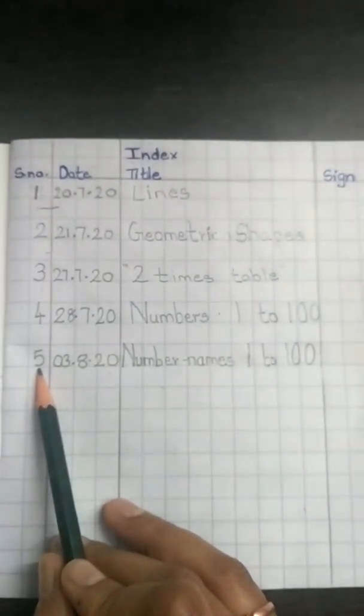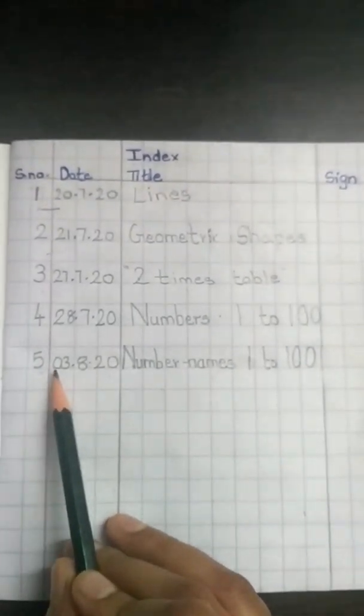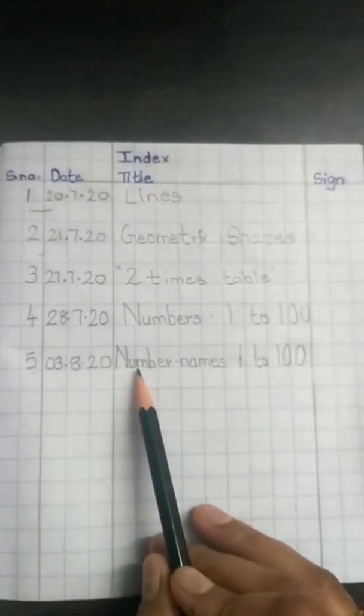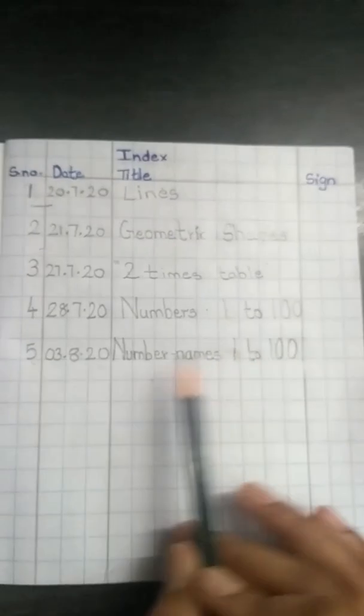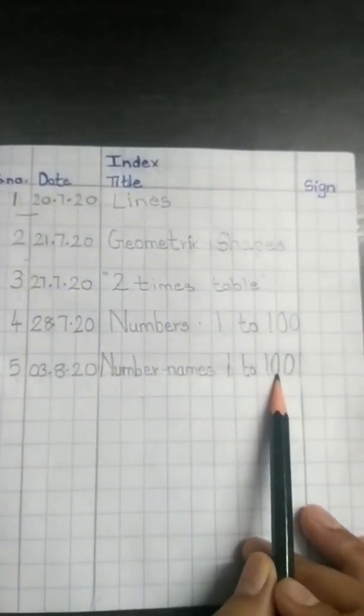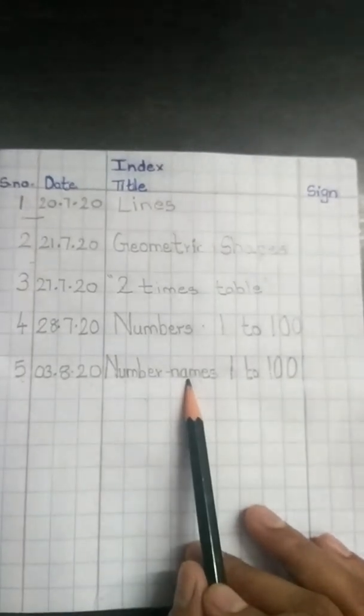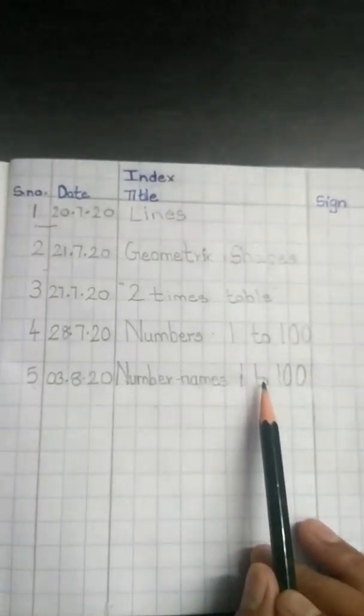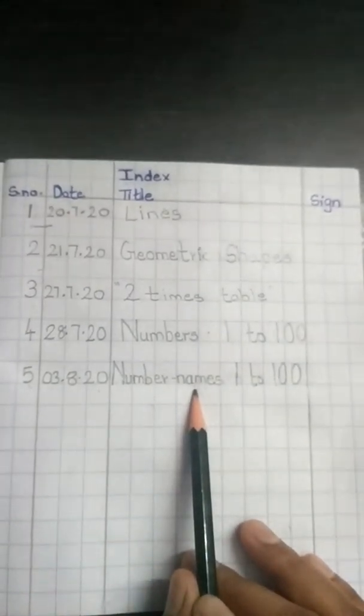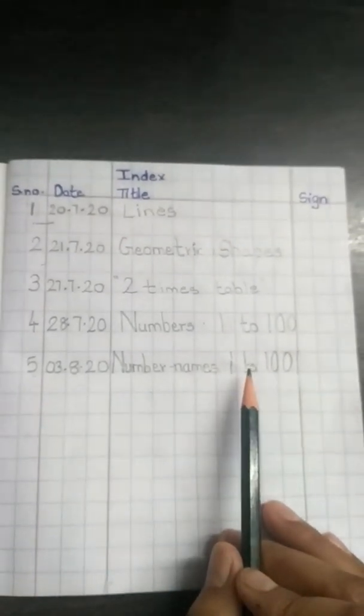So here I have already written the details of our topic today. That is serial number 5, today's date 03.8.20, and the name of the topic is number names 1 to 100. Number names means writing numbers in words.